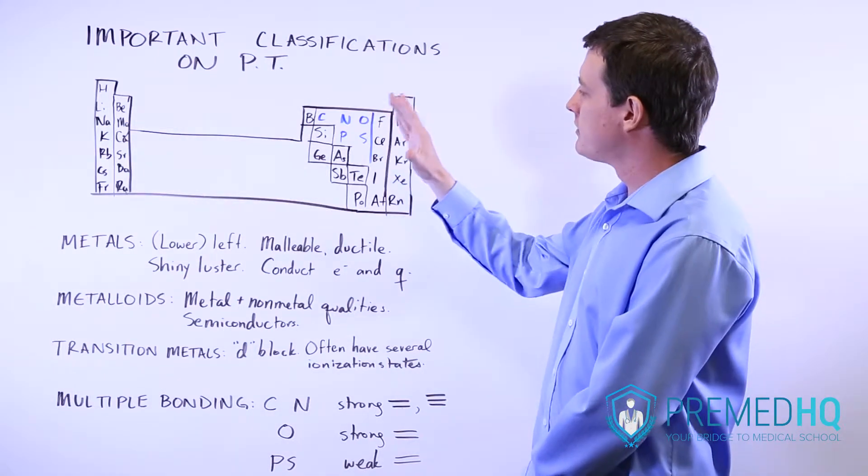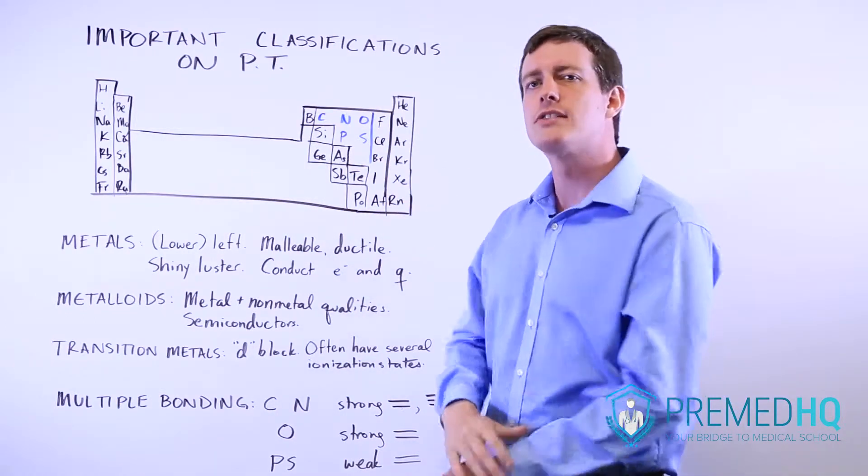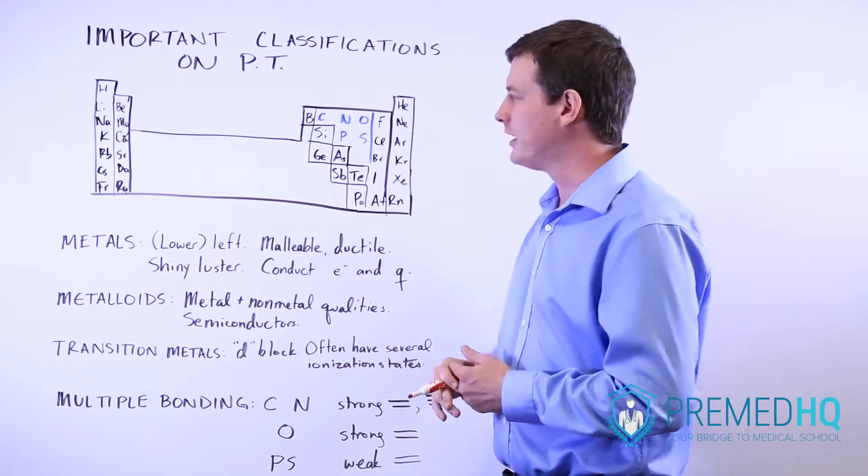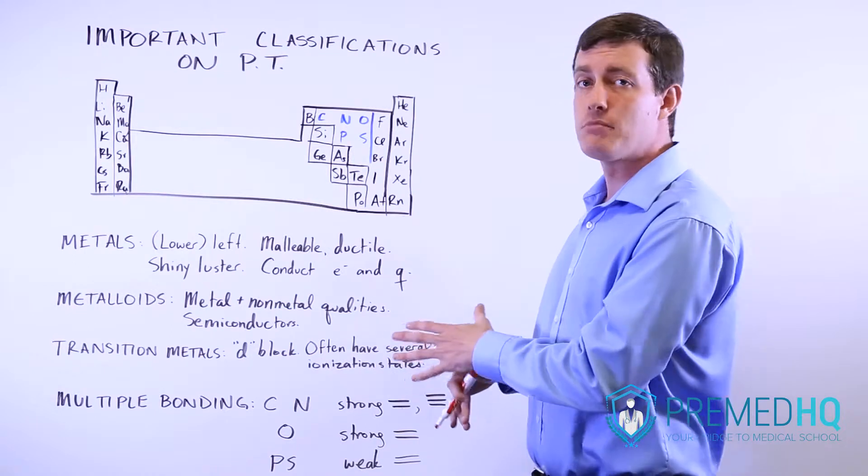The nonmetals don't share that, but the metalloids are somewhat in between. Metalloids have some metallic qualities and some nonmetal qualities, and they're also known as semiconductors.